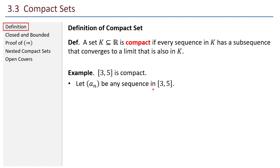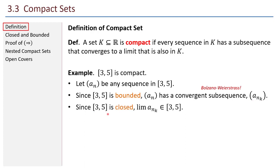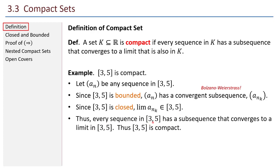Imagine taking any sequence in the interval from 3 to 5, meaning every term is some number between 3 and 5 inclusive. Since that set is bounded, the sequence has a convergent subsequence — that's the Bolzano-Weierstrass theorem. So there's some convergent subsequence a sub n sub k. Since the interval is closed, the limit of the subsequence is also in that set. Thus, every sequence in [3, 5] has a subsequence converging to a limit in that interval, so [3, 5] is compact.